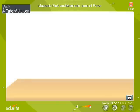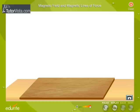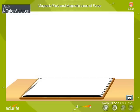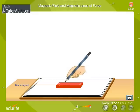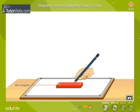Fix a sheet of paper on a drawing board. Place a bar magnet on the sheet of paper. Trace the boundary NS of the bar magnet.